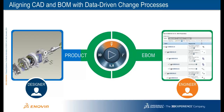And when the engineer updates the eBOM, the change is propagated to the standard product structure, allowing the designer to make revisions as needed. The BOM serves as a single version of the truth for engineering and other enterprise business process planning information, providing an always up-to-date and accurate source of product information.